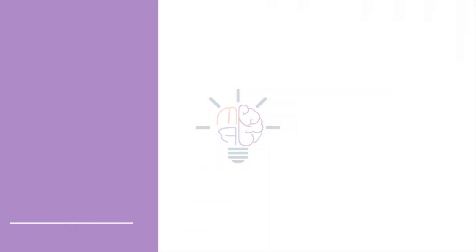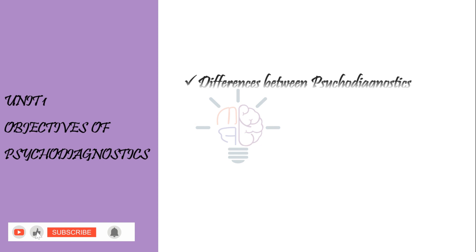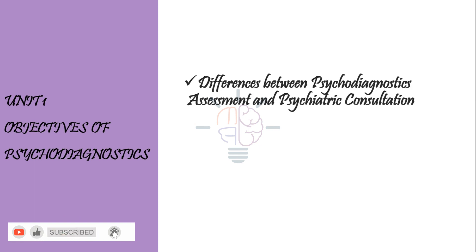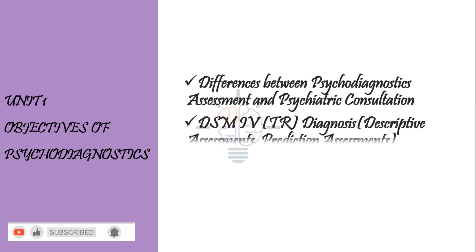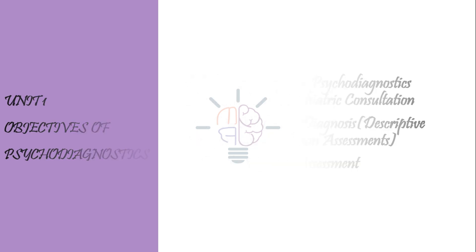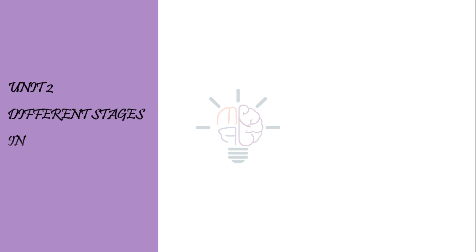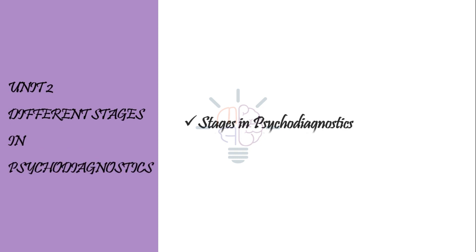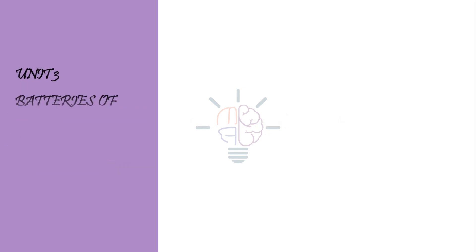Moving on to Block 2 Unit 1: differences between psychodiagnostics assessment and psychiatric consultation, DSM-4 diagnosis, descriptive assessment, prediction assessments, and specific types of assessment. Moving on to Unit 2, again only one topic: stages in psychodiagnostics.